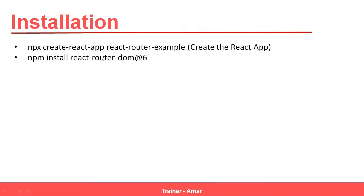Next I will show you how to install React Router in our project. First of all we need to create a React app, and to create the React app we write 'npx create-react-app' followed by the project name. In this case I have given the project name as React Router example. Once your project has been installed, we can install React Router with the command: npm install react-router-dom@6. This means we are installing version 6 of React Router.